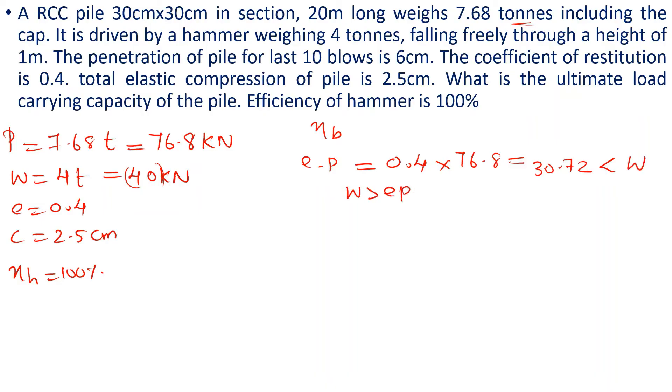e is 0.4, P is 76.8, so e times P equals 0.4 times 76.8 equals 30.72. Weight of hammer W is 40, so this is less than W. W is greater than e times P, so we use that equation.